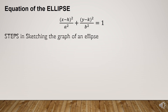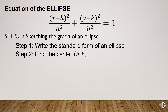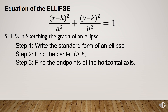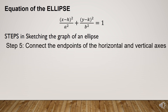To make it easier to sketch the graph of the ellipse: first, write the standard form. Second, find the center with coordinates h and k. Third, find the endpoints of the horizontal axis: (h minus a, k) and (h plus a, k). Fourth, find the endpoints of the vertical axis: (h, k minus b) and (h, k plus b). Since we have the endpoints of both axes, plot them on the Cartesian plane and connect the endpoints.